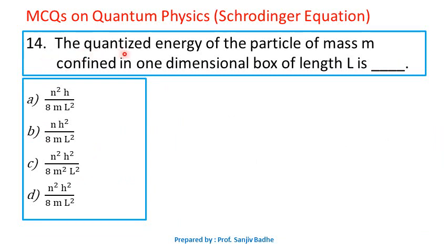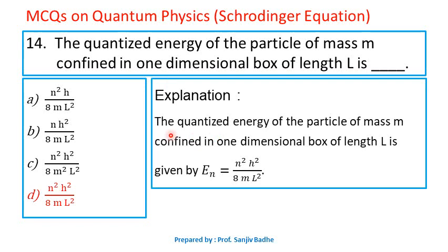Question number 14. The quantized energy of a particle of mass m confined in a one-dimensional box of length L is — options are n²h/8mL², nh²/8mL², n²h²/8mL², or n²h²/8mL². The quantized energy is given by En = n²h²/8mL², where n is an integer, h is Planck's constant, m is mass of the particle, and L is length of the box. Option D is correct.